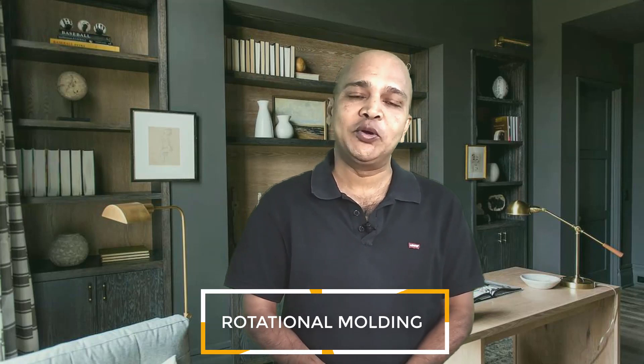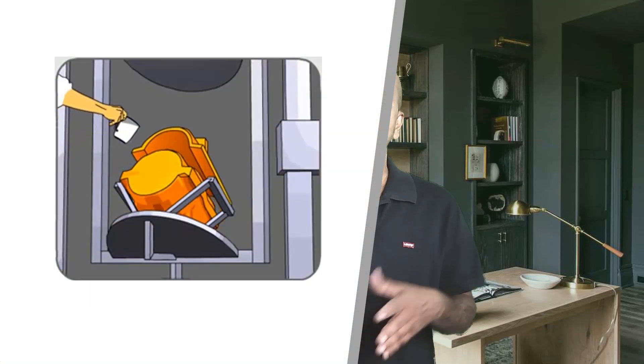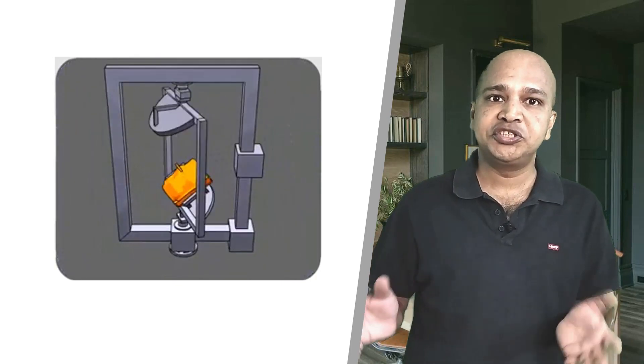Now we have come to our last methodology which is rotational molding. In this method we put the liquid plastic into the mold and the entire mold is rotated. By doing so, the plastic gets stuck to the walls of the mold and forms a hollow shape of the product. The product will be hollow always in this process.